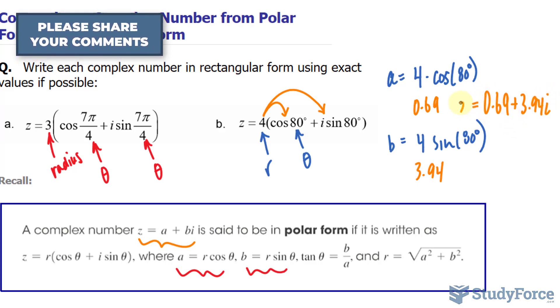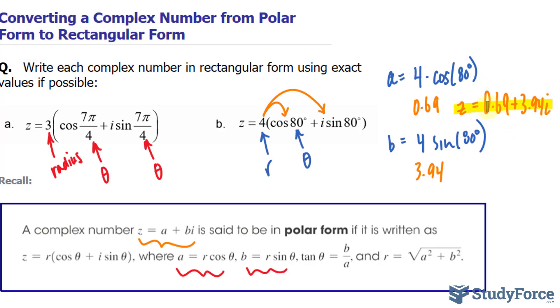And that, of course, is equal to z. And there you have it. That is how to convert a complex number from polar form to rectangular form.